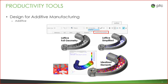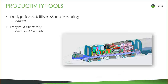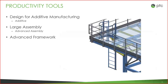Specific to additive manufacturing, we have design tools like latticing to build into your designs — these lattices create robust, lightweight designs that are structurally sound and take advantage of all the possibilities that additive manufacturing offers. We have tools in advanced assembly specifically targeted at handling larger assemblies, setting different levels of representations to decrease the strain on your CPU. For framework design, we have a tool that automates the creation of structural frameworks using comprehensive libraries for profiles, equipment, and joints.